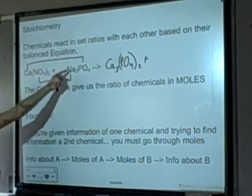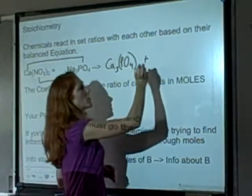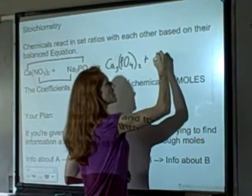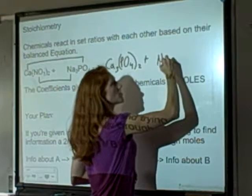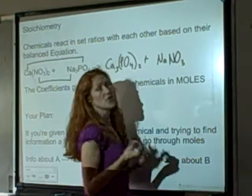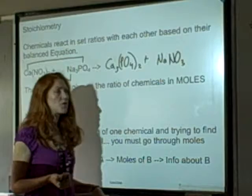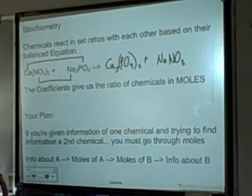Then I have positive sodium and negative nitrate. Na is a 1+ charge, nitrate is NO3 with a 1− charge. Their charges are already balanced, so now I just balance the equation.